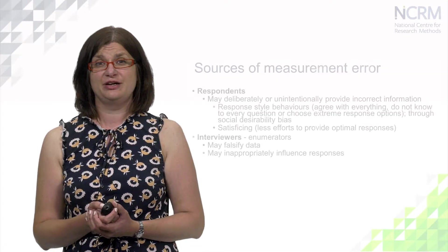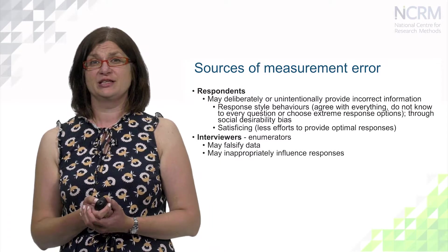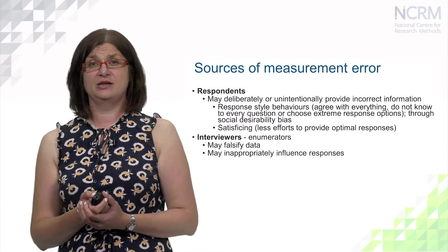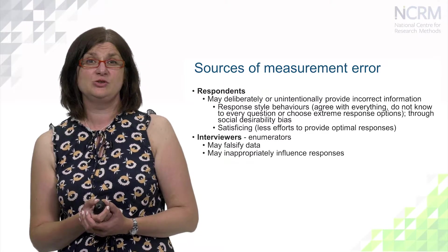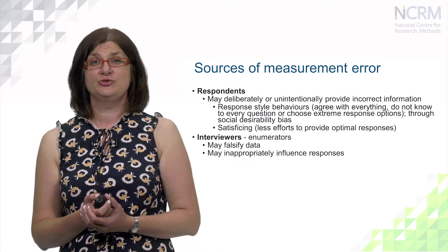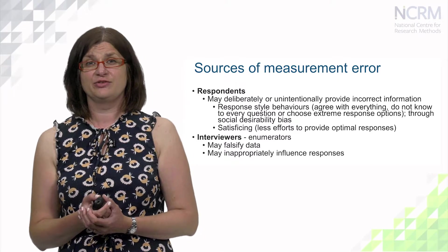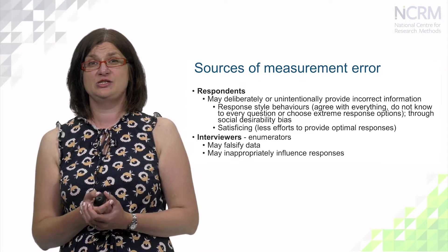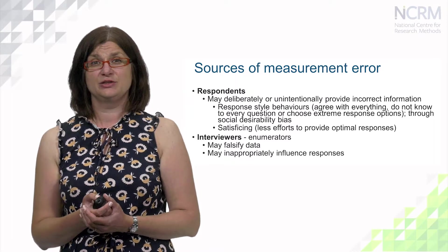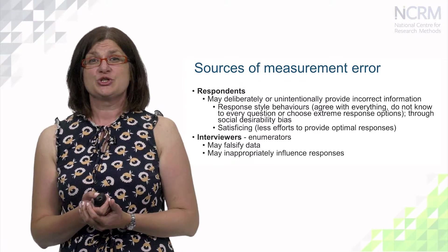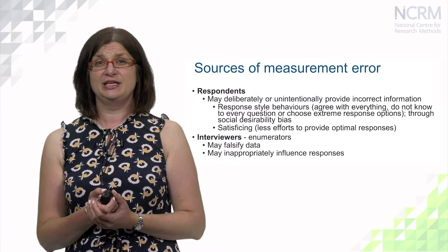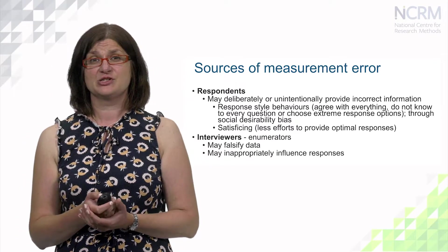There are four main sources of measurement error: respondents, interviewers, questionnaires, and the mode of administration. Respondents may deliberately or unintentionally provide incorrect information – for example, through response style behaviors such as agreeing with everything on attitudinal questions, saying 'do not know' to every question, or choosing extreme response options. They can also impact data quality through socially desirable answers, or through satisficing, when they put less effort into providing optimal responses.